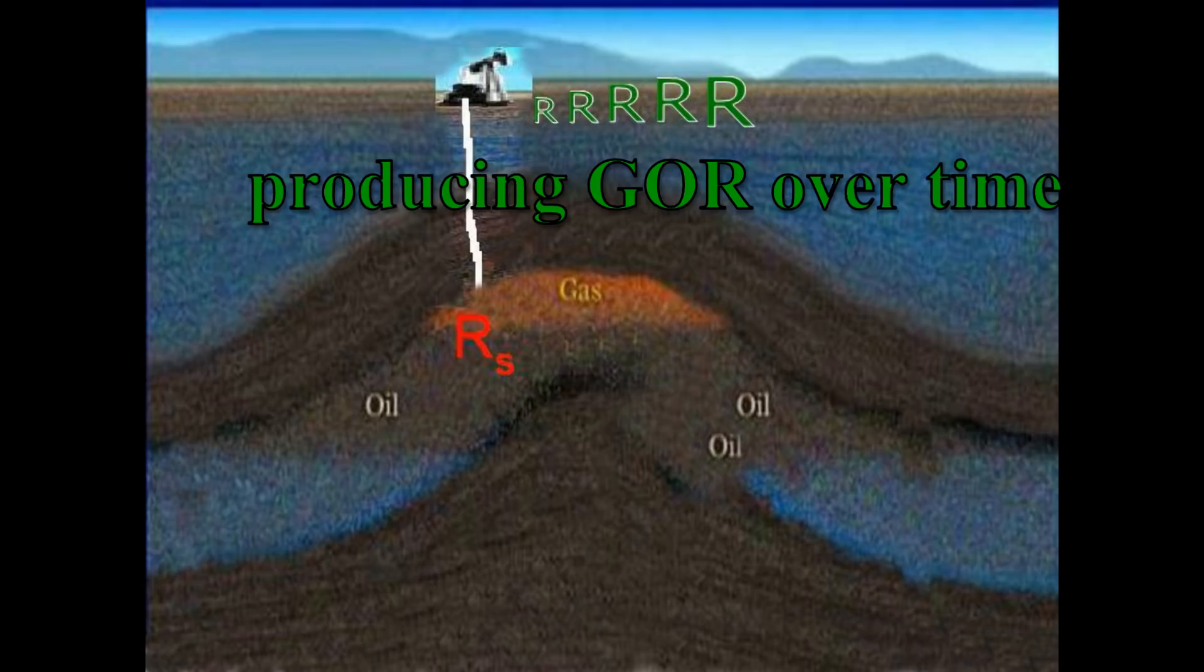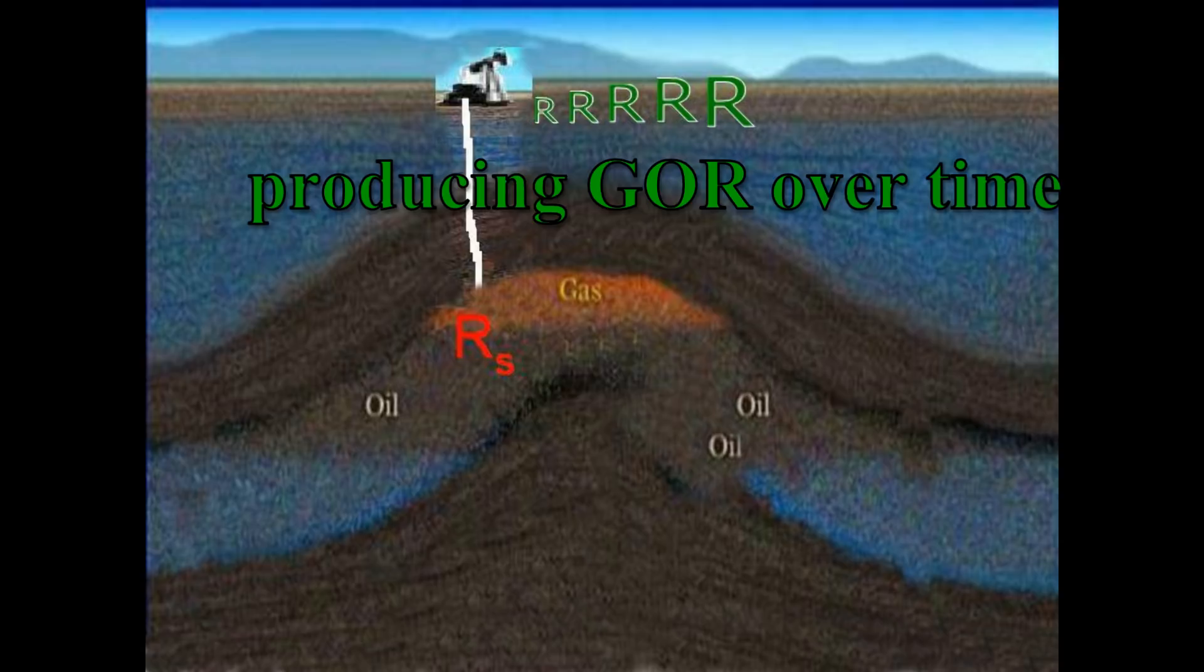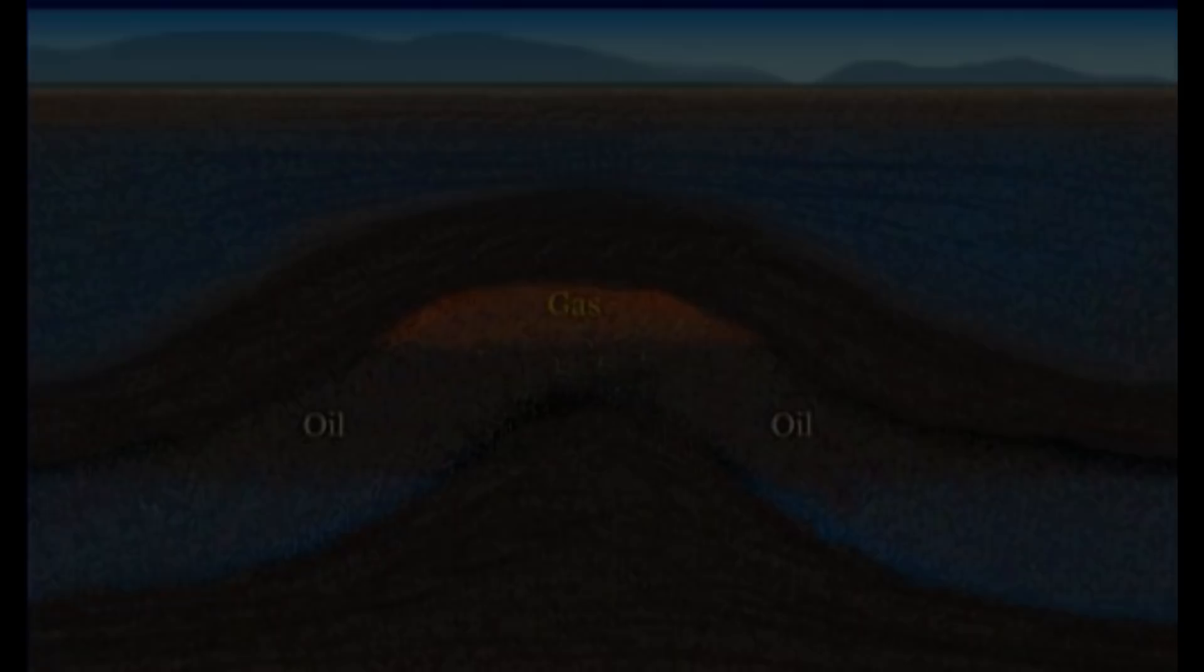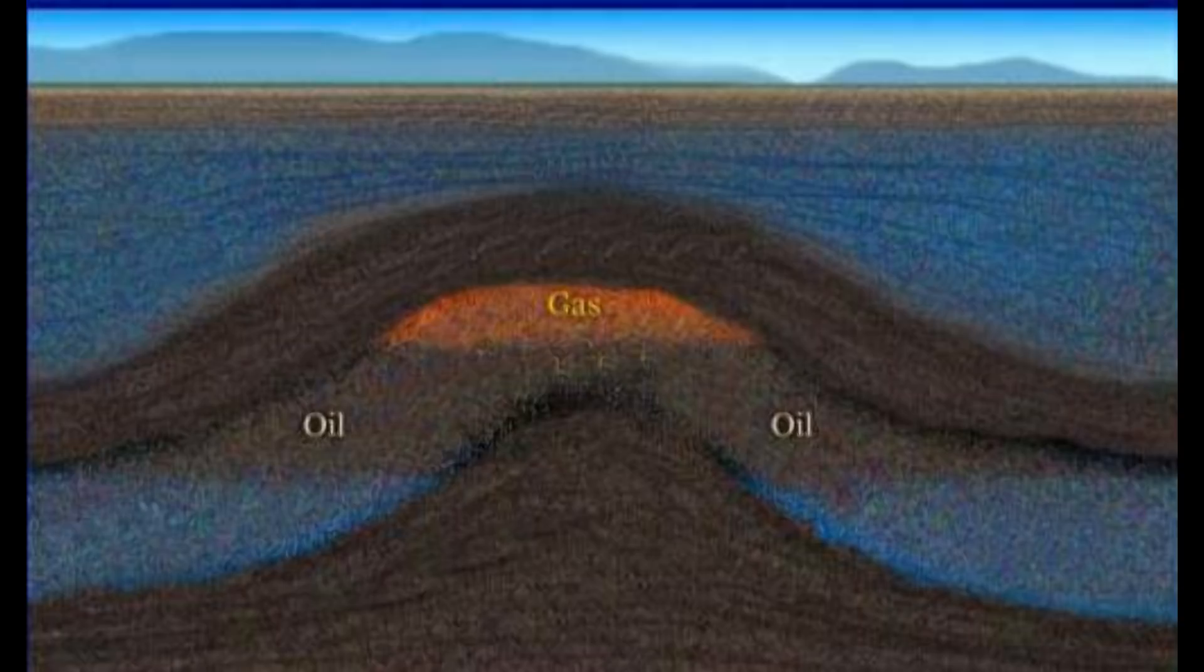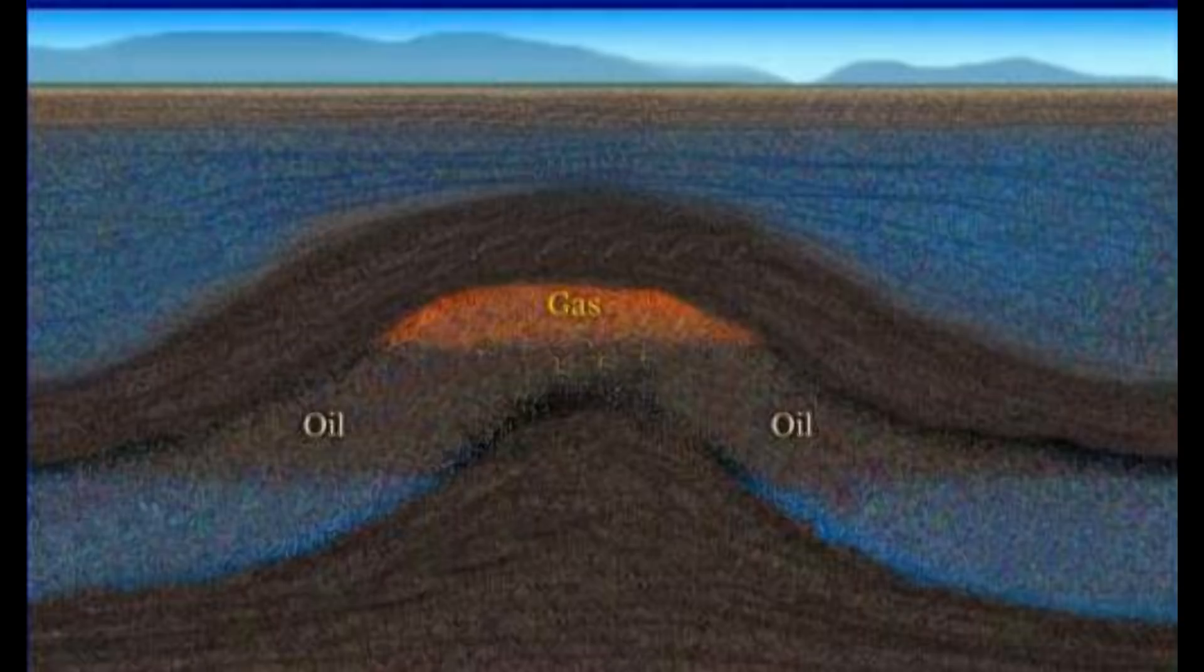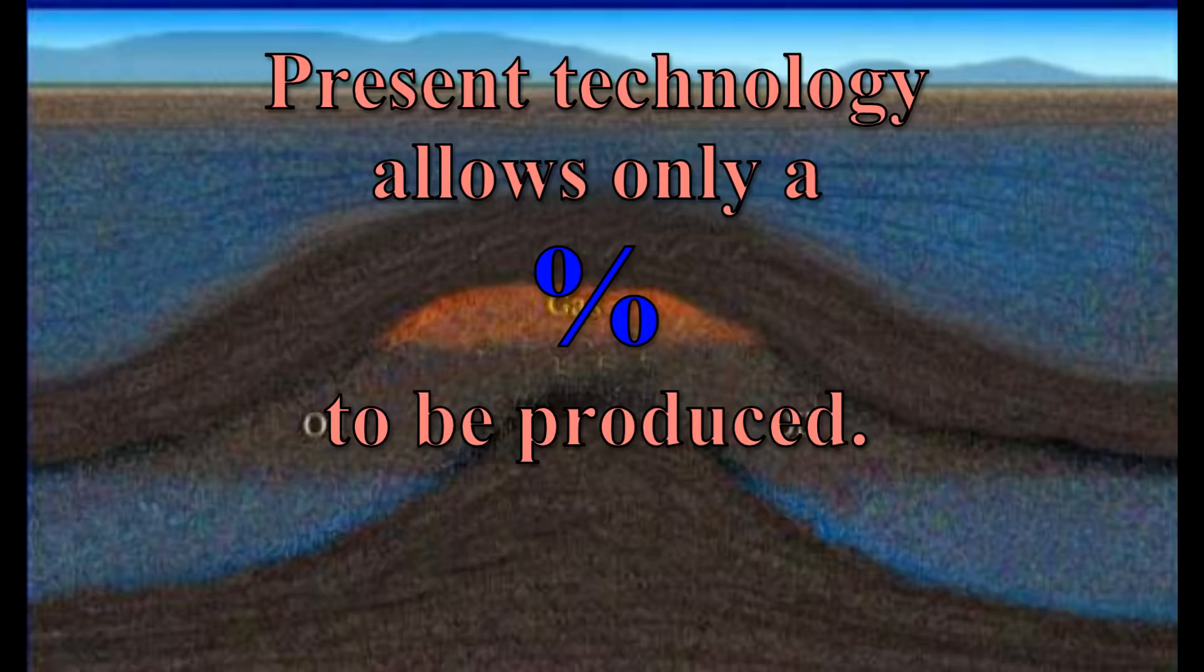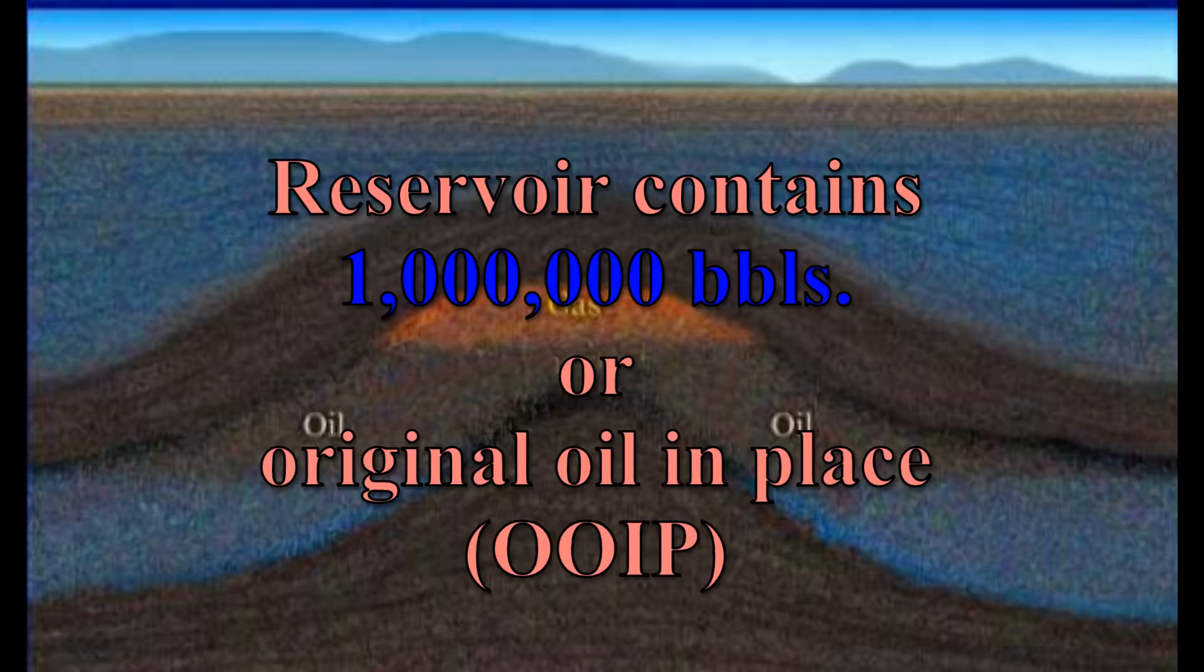One last definition is called the recovery factor, or RF. As you know, our present technology does not allow us to produce every molecule of oil and gas in a reservoir. No matter what we do, we can only produce a percentage of what is there. If the reservoir contains an estimated 1 million barrels of oil, or original oil in place, OOIP, and our RF, or recovery factor, is 37%, then we estimate that we can produce 370,000 barrels of that 1 million barrels of oil. This is called our RF.